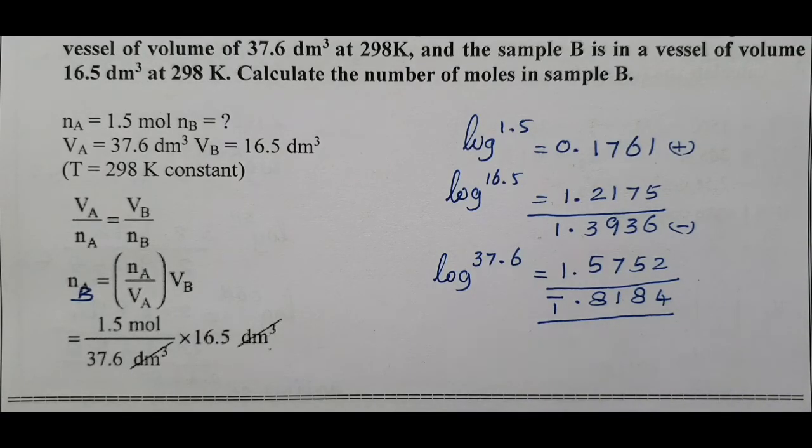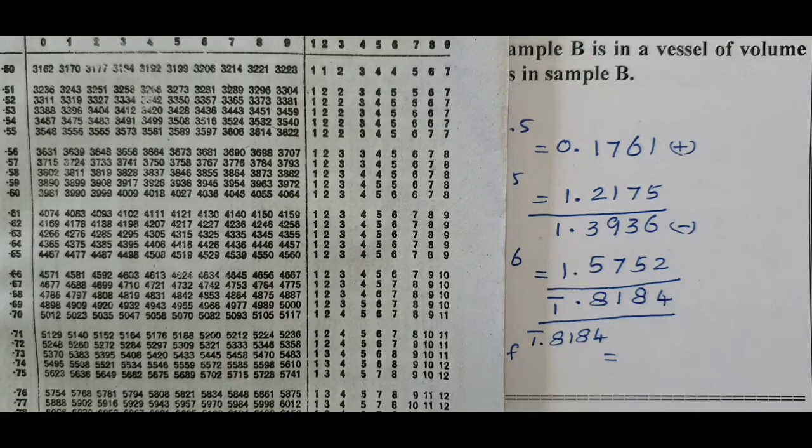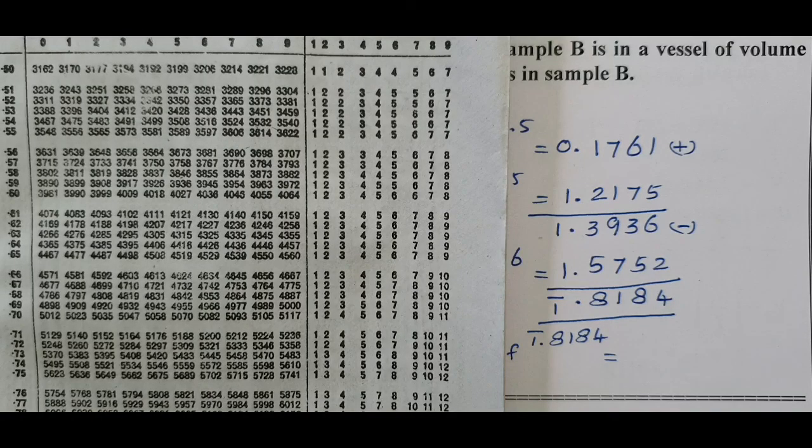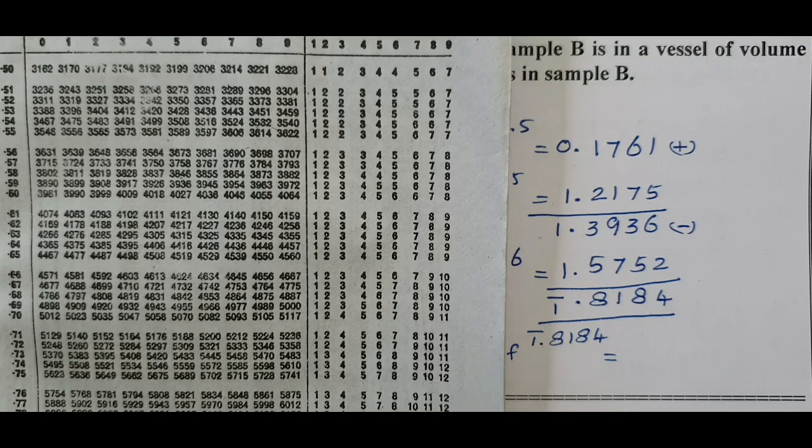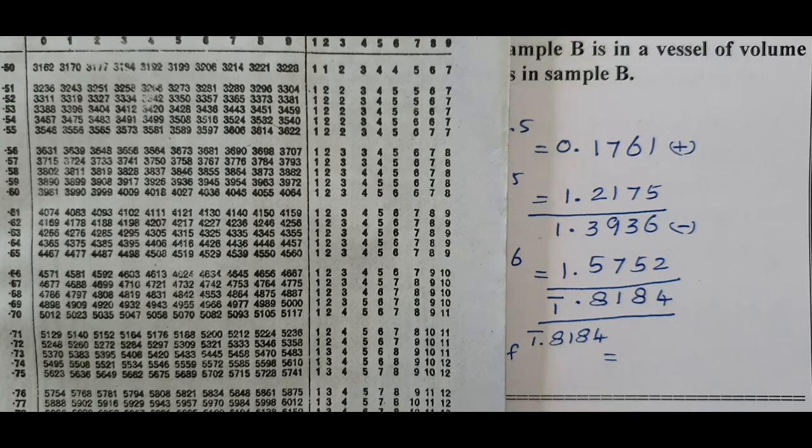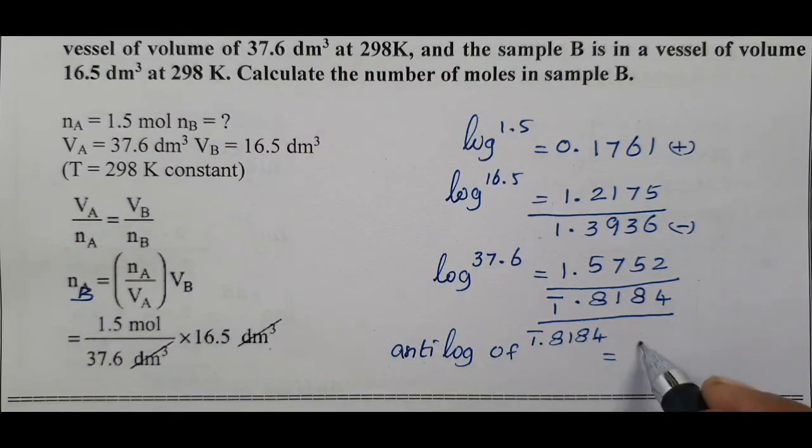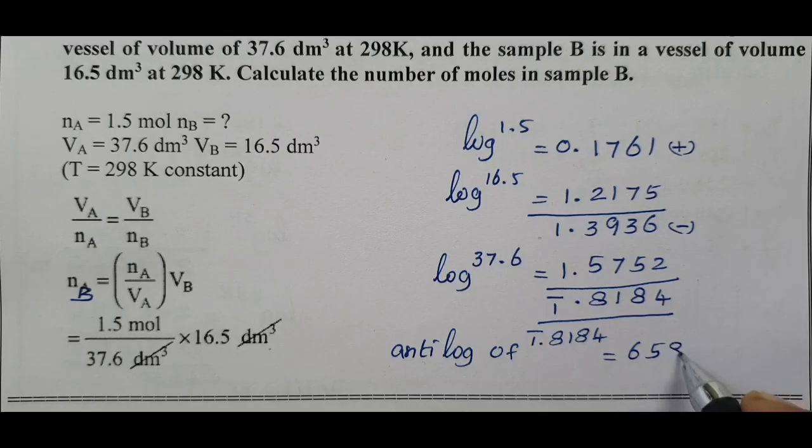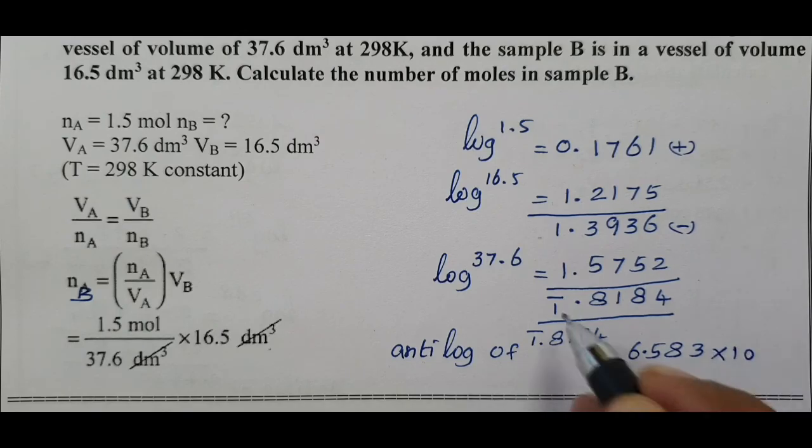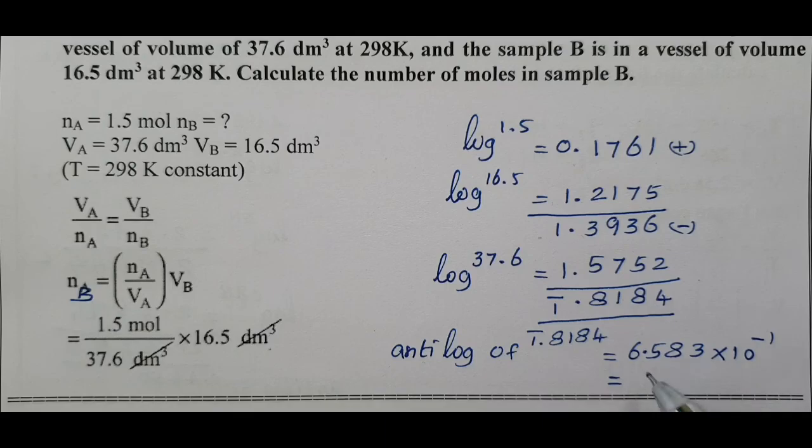Antilog 81, 8 is 6577, we have 4-6, we add 6583, one decimal point, 10 power minus 1. The answer is 0.6583, that is number of moles.